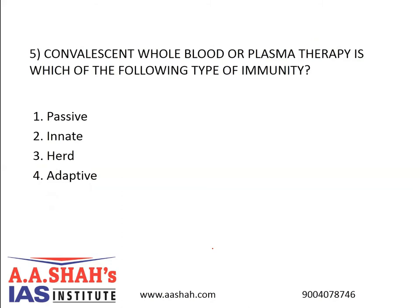Question 5. Convalescent whole blood or plasma therapy is which of the following type of immunity? 1. Passive, 2. Innate, 3. Herd, 4. Adaptive. The correct answer is 1, Passive. Convalescent plasma therapy is a process in which blood plasma from a patient who has recovered from COVID-19 is infused into a critically ill patient so that the specific antibodies present in the blood of the recovered person can help fight the infection.